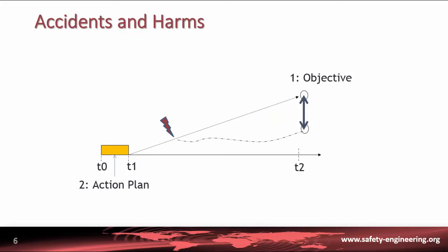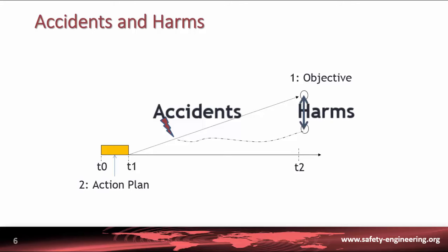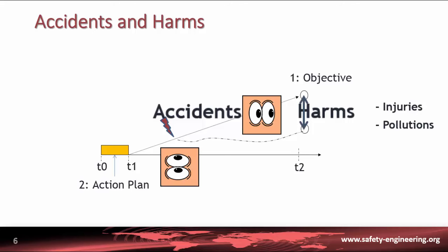Within the scope of industrial safety, dreaded events are called accidents. Their consequences in accordance with the objectives are called harms. When the objective is the preservation of health, harms are called injuries. When the objective is the preservation of the environment, harms are called pollutions. The different perspectives on safety will be distinguished by the way the causes of accidents and the harms will be considered.